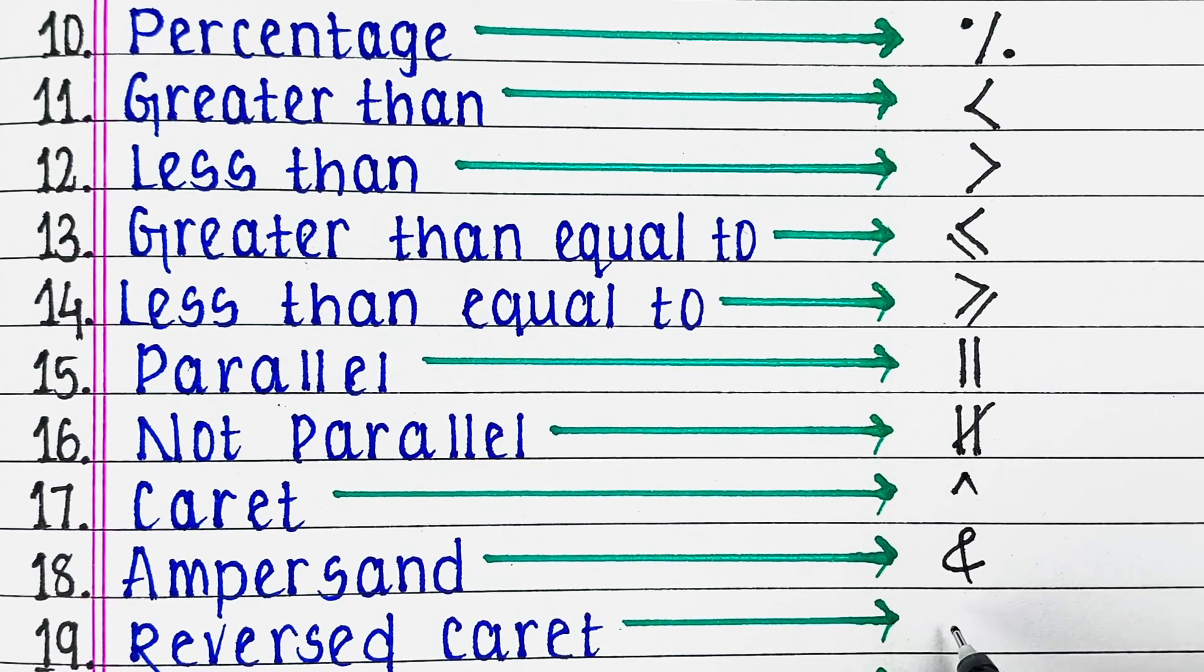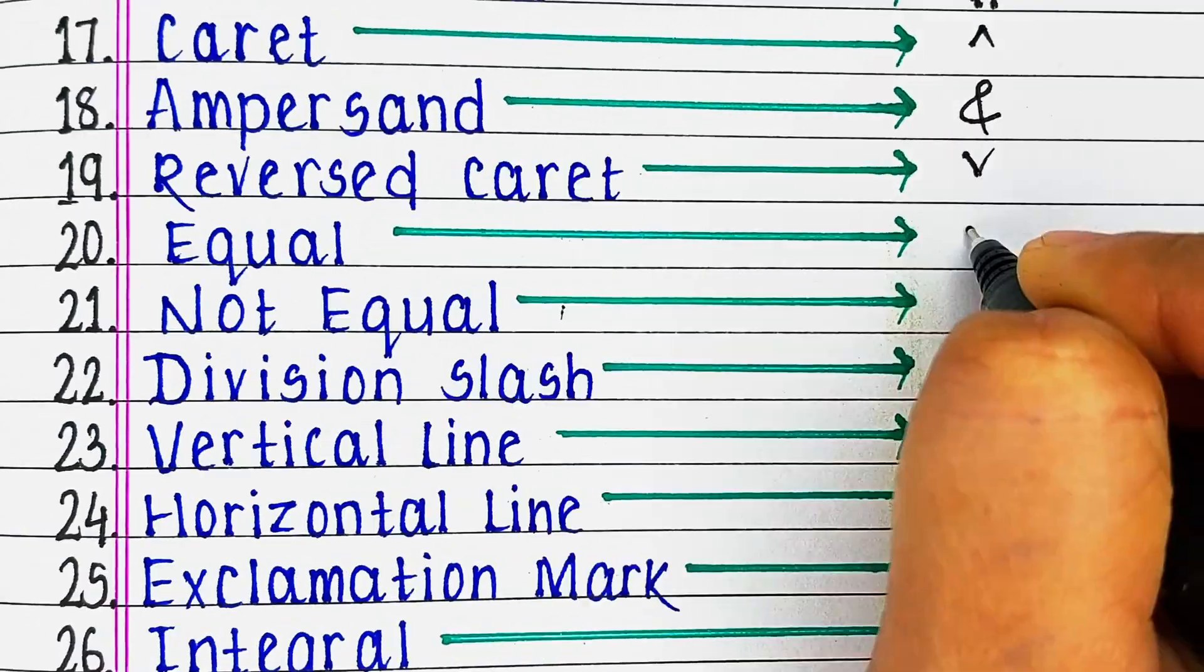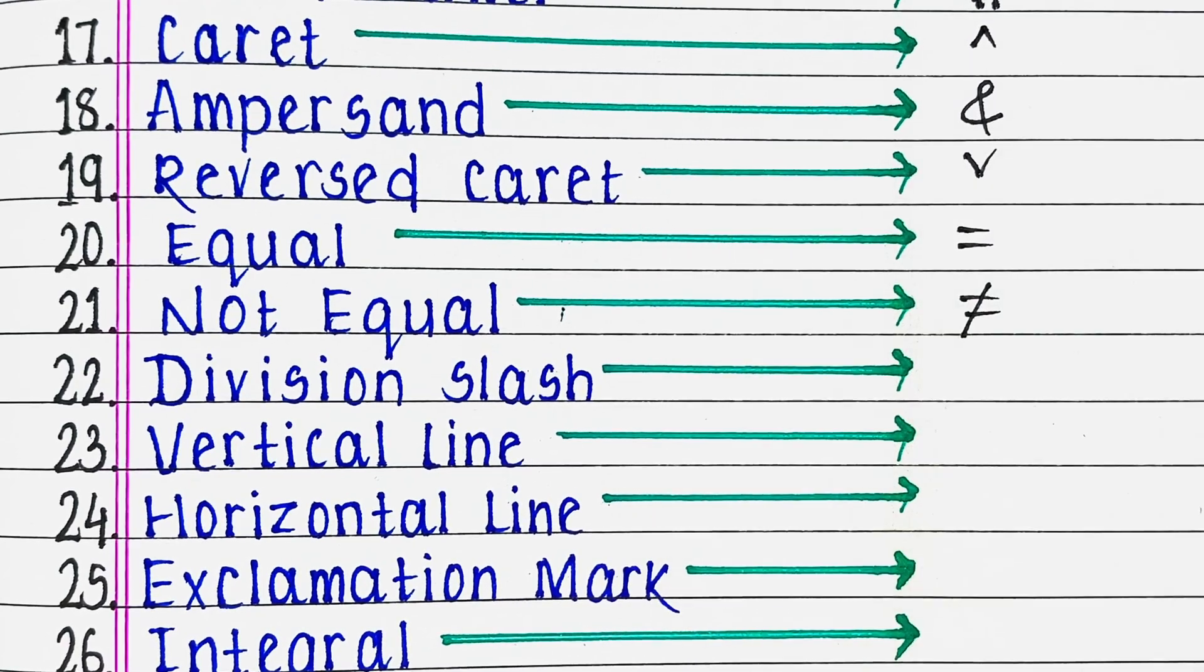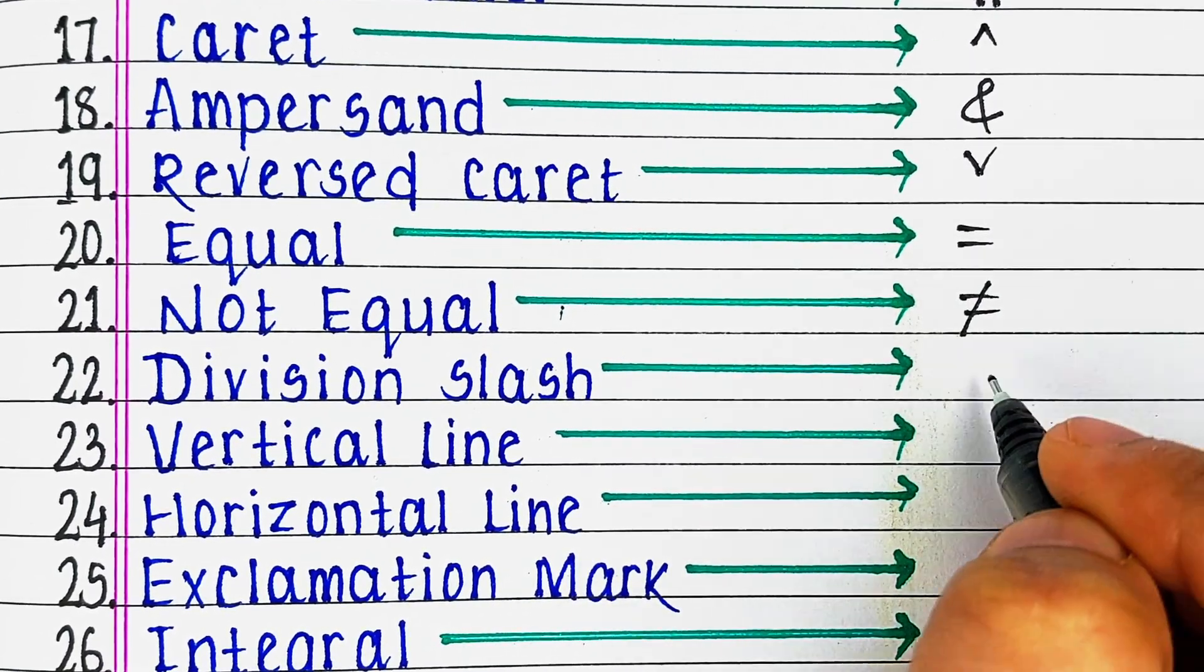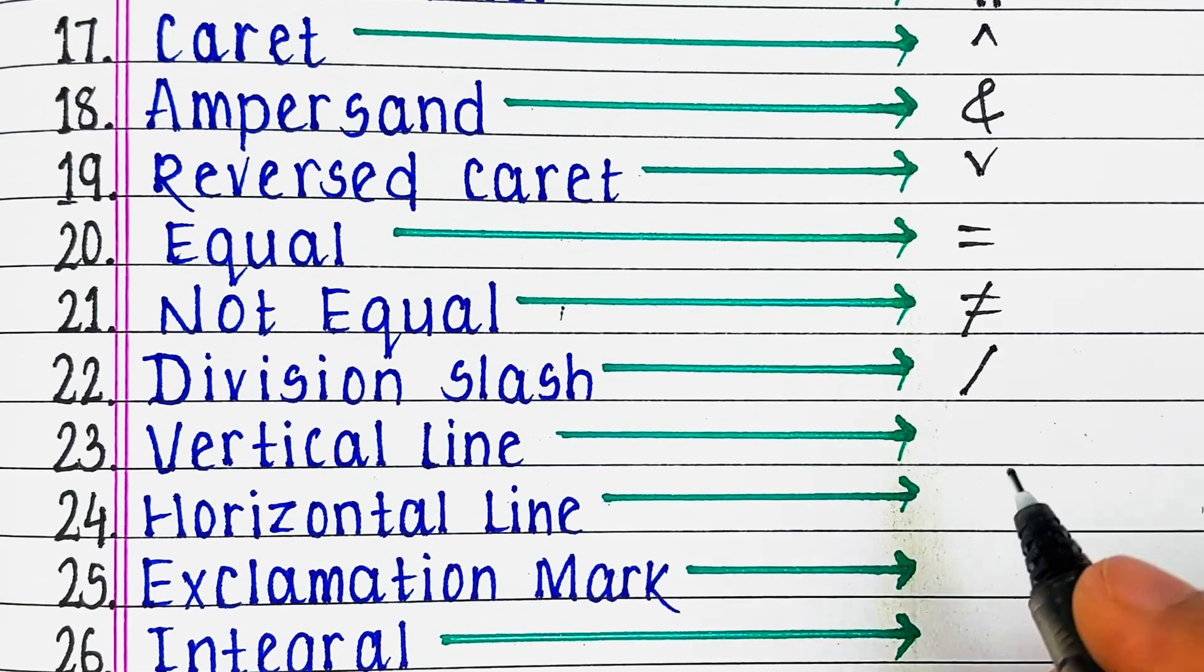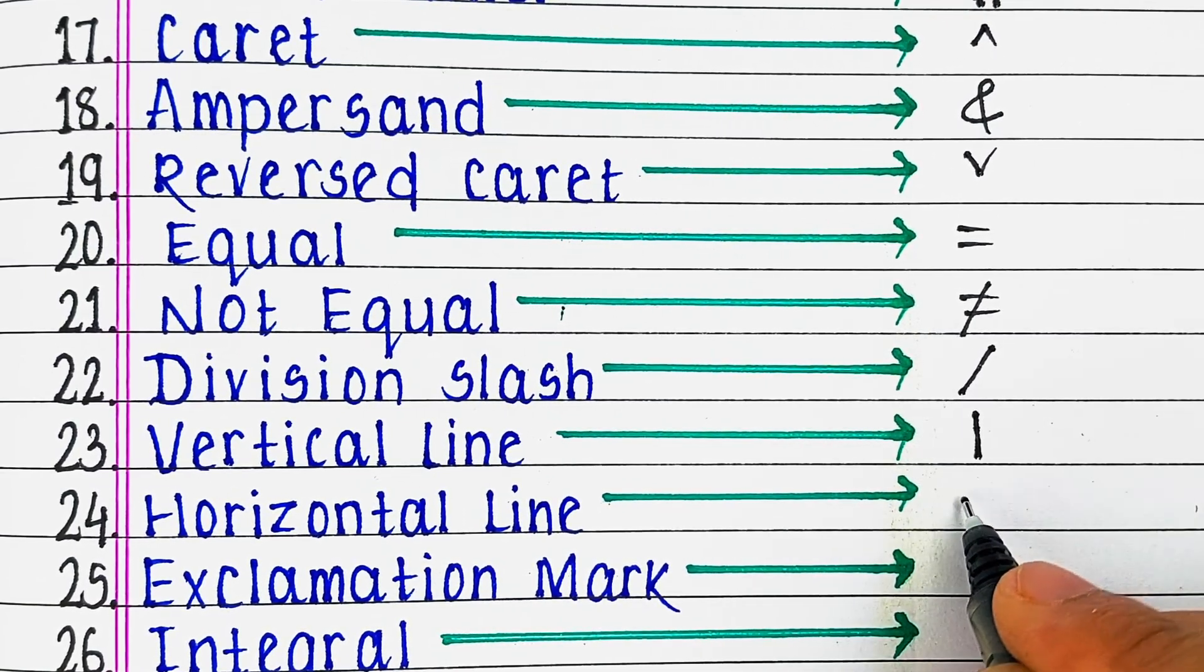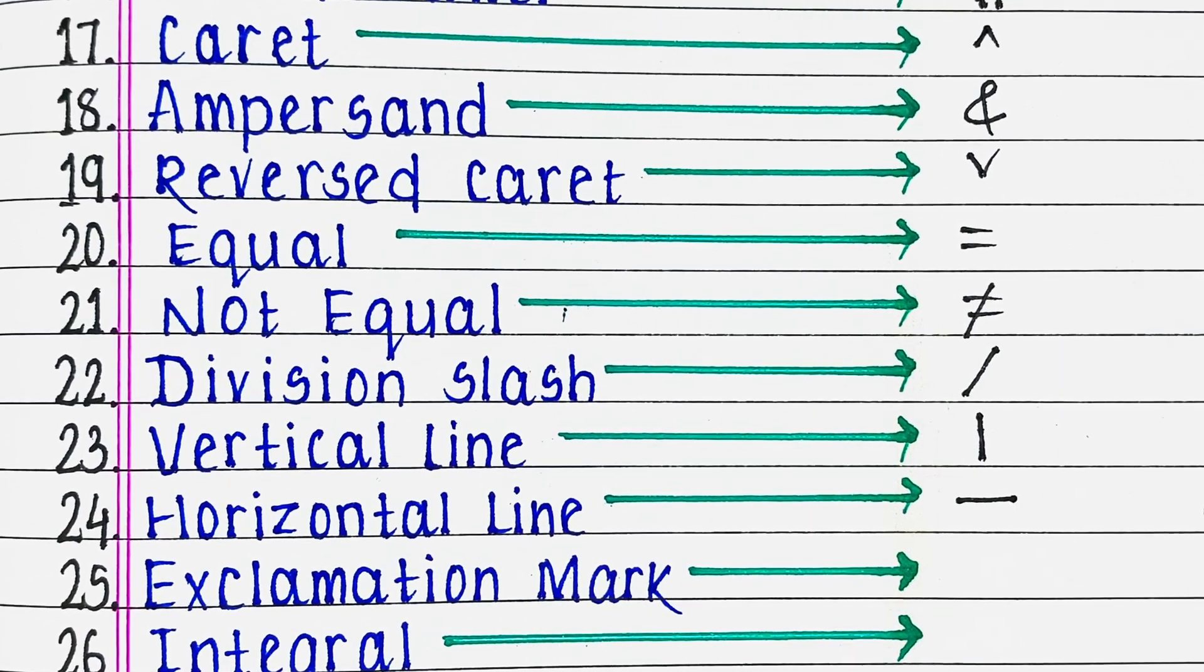Next is reversed caret, next equal, next is not equal, next division slash, next is vertical line, next horizontal line.